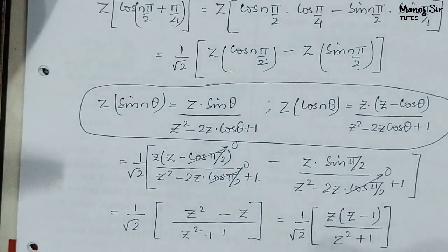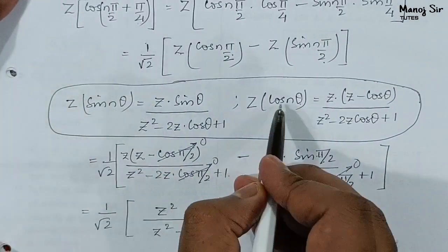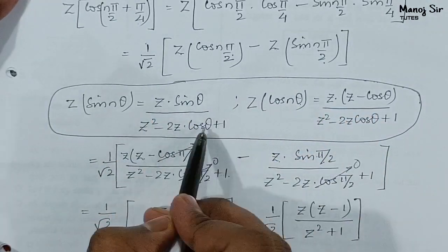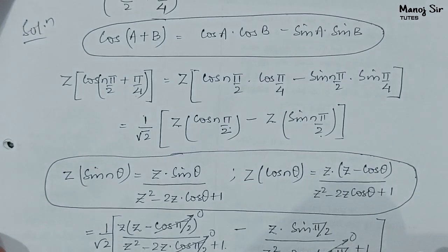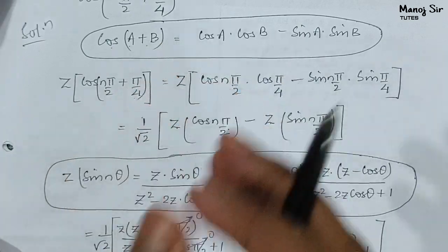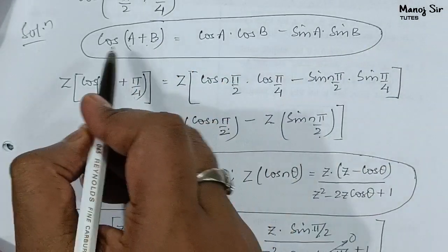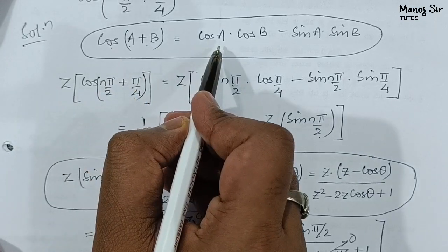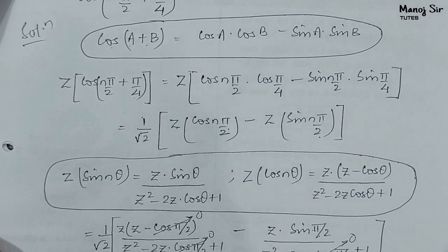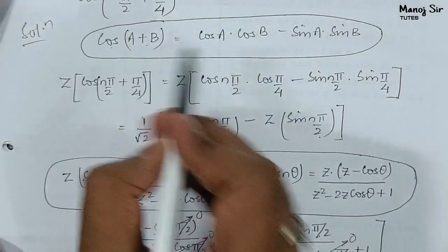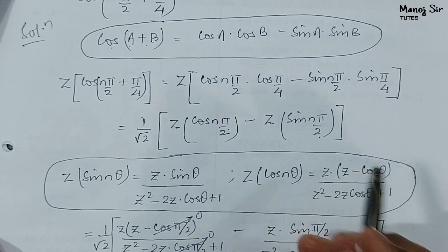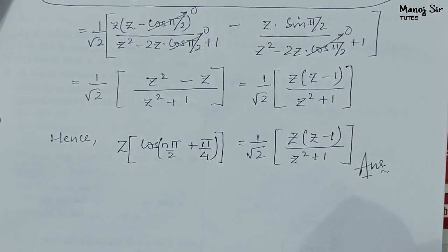To summarize, you must remember the formulas for Z transform of cos(nθ) and sin(nθ) — the denominator part is the same in both cases. You also need to know the formula for cos(a+b) = cos(a)cos(b) − sin(a)sin(b), and similarly for cos(a−b). Please write in the comments what the formula for cos(a−b) is. In the previous video we also used sin(a+b) and sin(a−b).